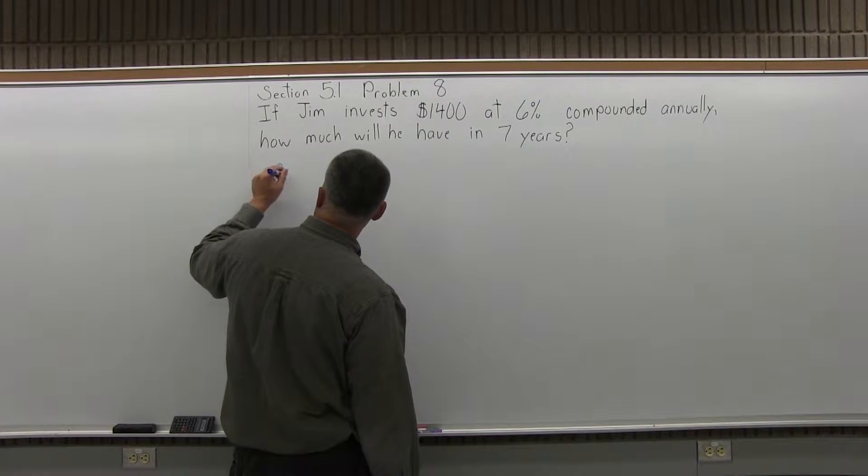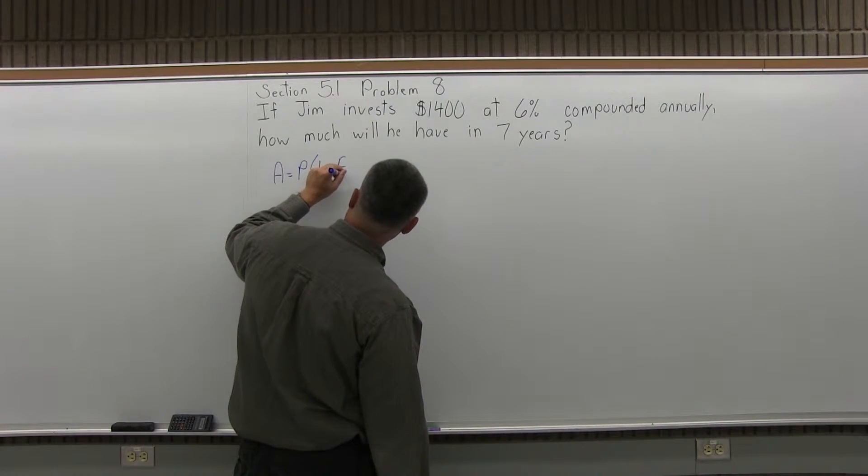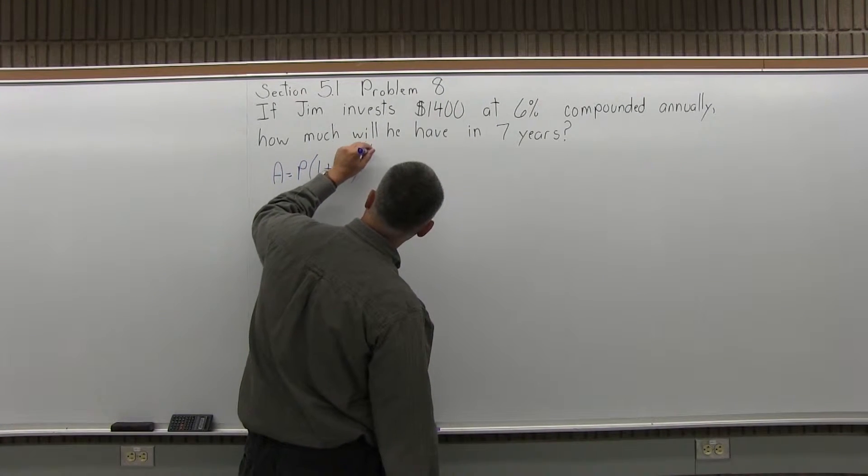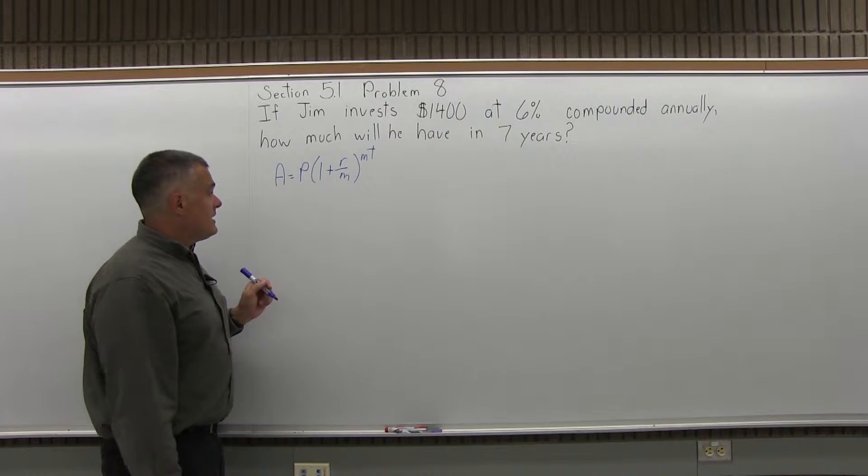The compound interest formula is A equals P times, in parentheses, 1 plus R over M, to the M times T. Now we'll fill that in.